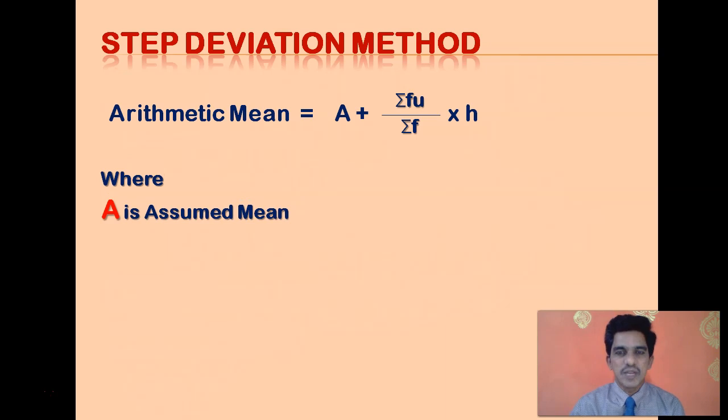First we have A. A is actually the assumed mean. We have a classified data. Generally the intent is that the class with the highest frequency, we compare its class mark as the assumed mean.